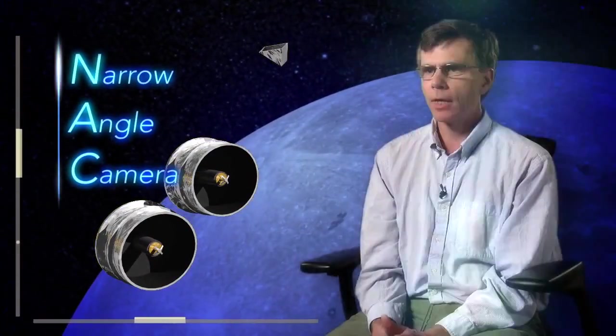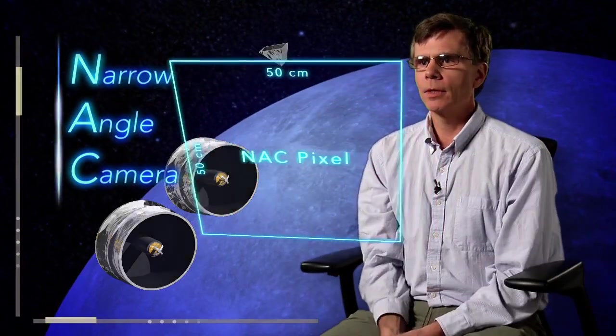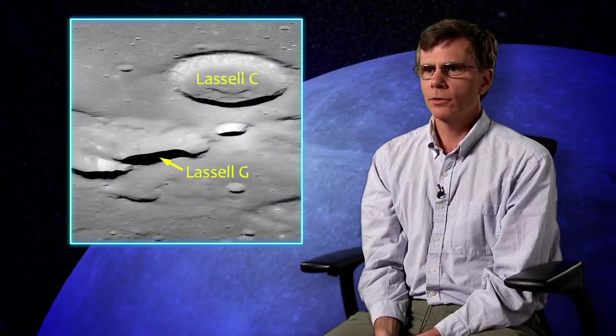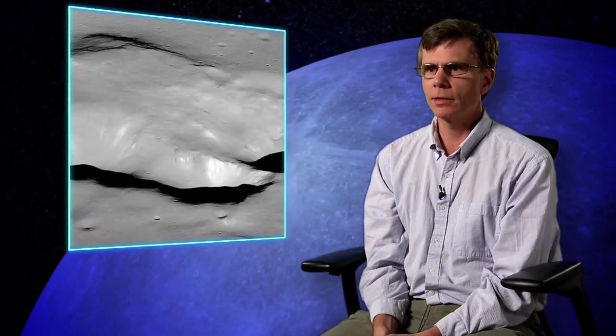There's two identical narrow angle cameras that are very high resolution with pixels about this big, 50 centimeters, and it was designed so you could look at a human scale on the surface to find safe and engaging landing sites.